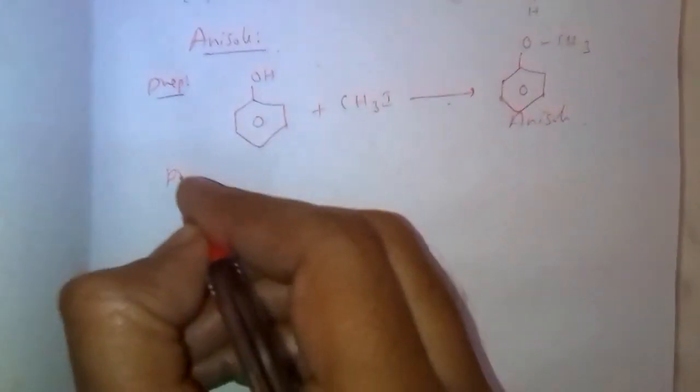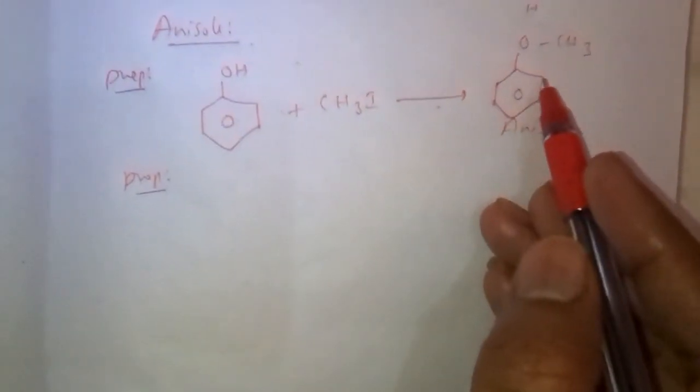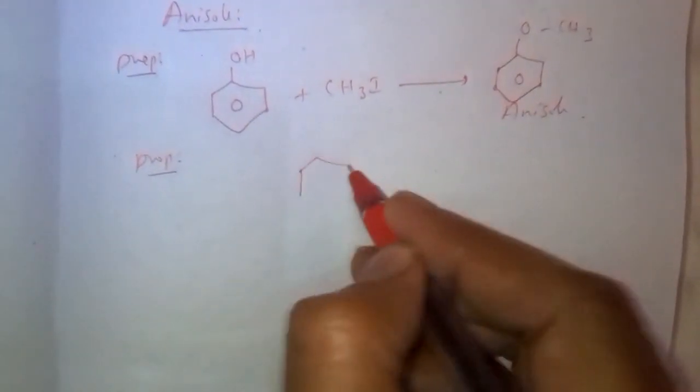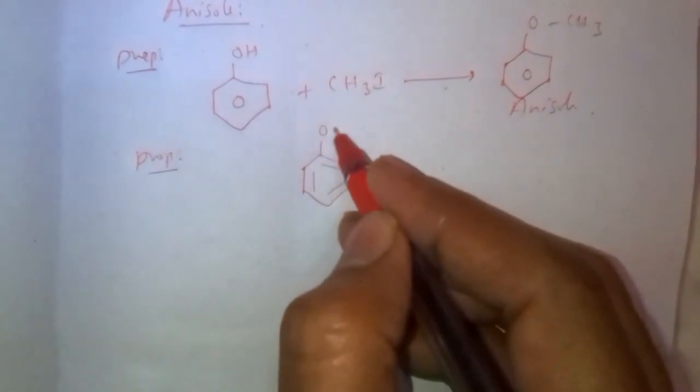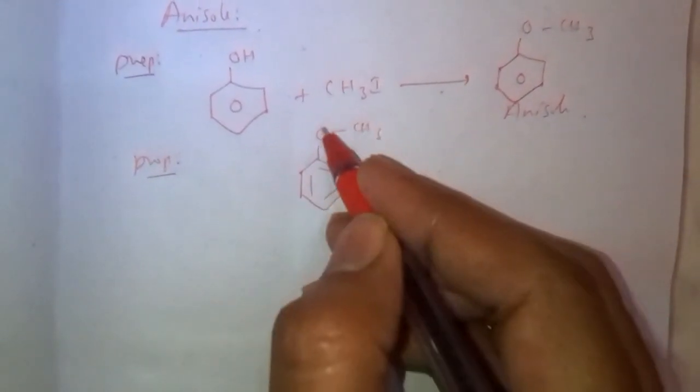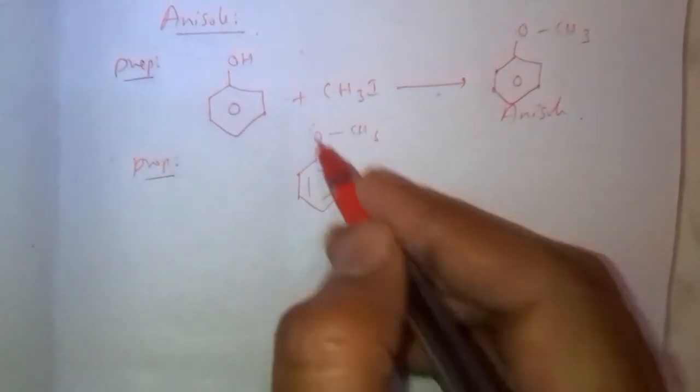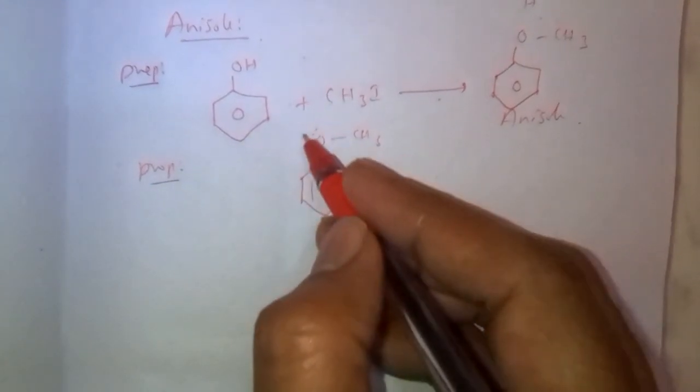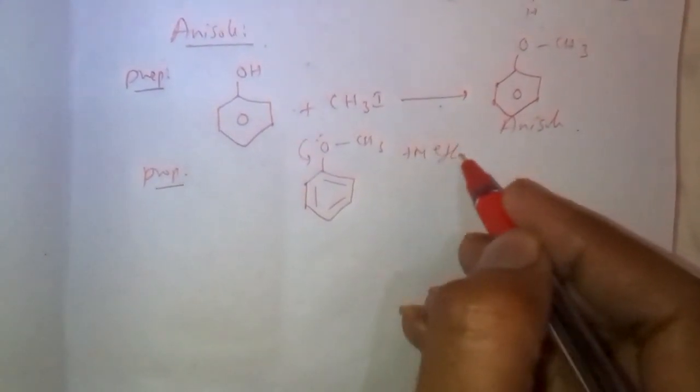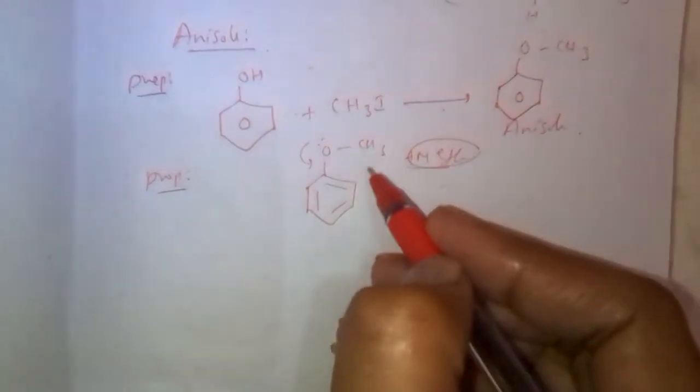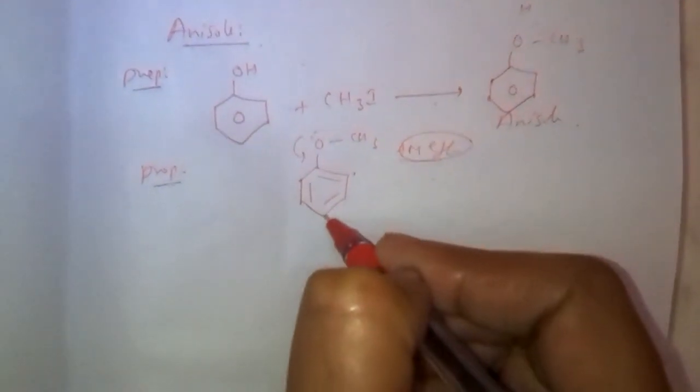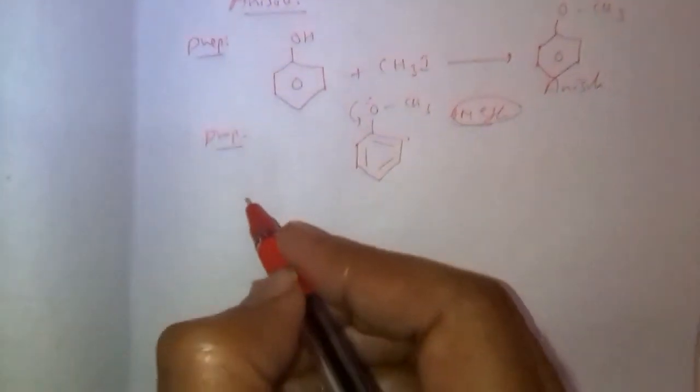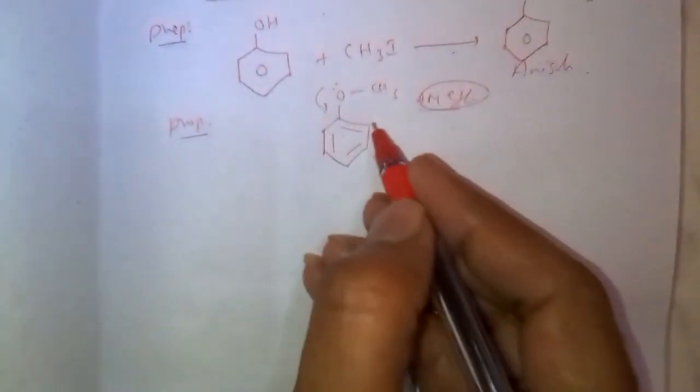Properties of anisole. In anisole, electron density is maximum at ortho-para positions. OCH3, because lone pair containing group attached to aromatic system, it exhibits plus M effect. Because of plus M effect, electron density increases at ortho and para positions, so electrophilic substitution takes place at ortho and para position.